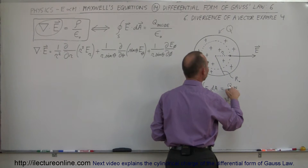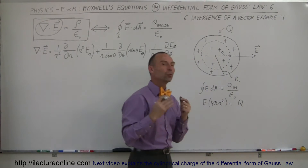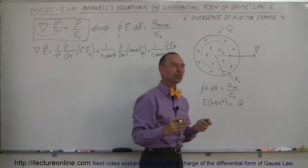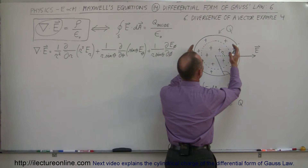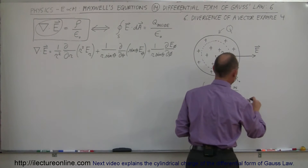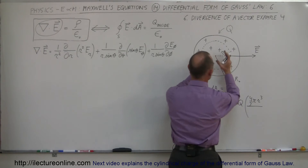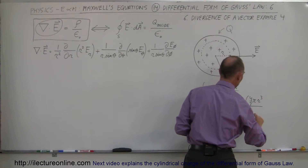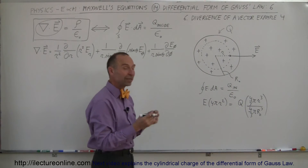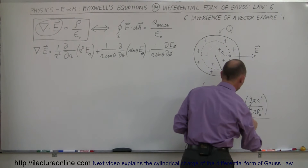That equals Q inside, which is the total charge Q times the ratio of the volume of the inside sphere to the volume of the outside sphere. So that's Q times the ratio of four-thirds pi r cubed divided by four-thirds pi R sub nought cubed — giving us the amount of charge inside the Gaussian surface — and we divide that by epsilon sub nought.